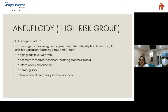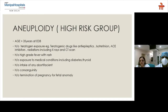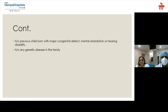High-risk groups in which anomalies are more common include: maternal age over 35 years at the expected date of birth; history of teratogenic exposure such as antiepileptics, isotretinoin, ACE inhibitors, X-rays, or CT scans; history of high-grade fever with rash; medical conditions including diabetes and thyroid disorders; intake of abortifacient drugs in the first trimester; history of consanguinity or same-community marriage; previous pregnancy with fetal anomaly; previous child born with major congenital defect, mental retardation, or hearing disability; and any genetic disease in the family.